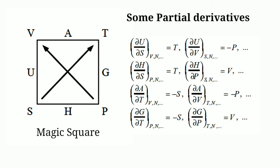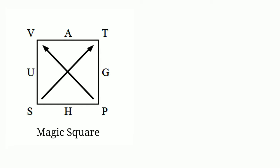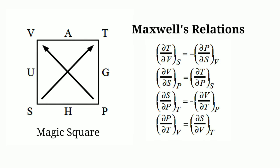Applying the same technique we can find out the other two relationships for G and A. All of you try to find out these two relationships using the magic square, and if you have any doubts then put your thoughts in the comment box. Now let us move on to the most interesting and most difficult equations — that is Maxwell's relations.